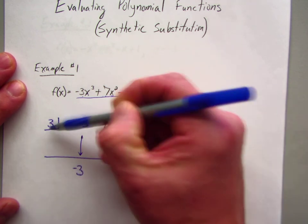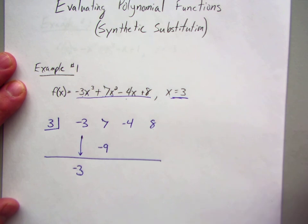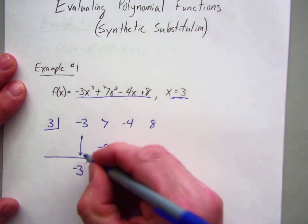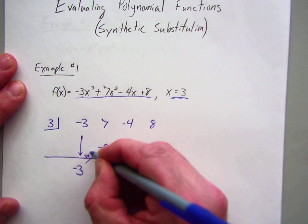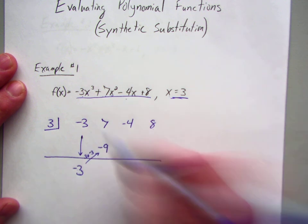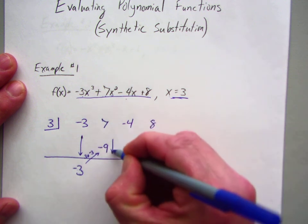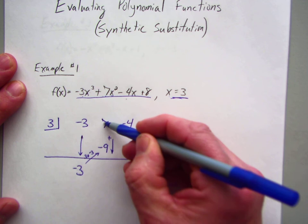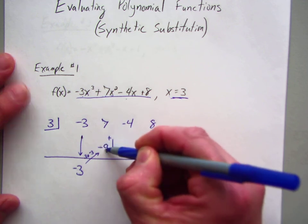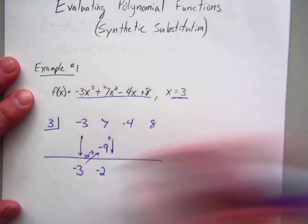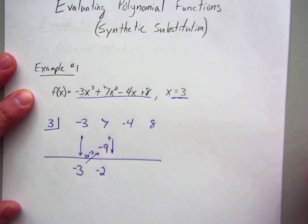So negative 3 times 3 is negative 9. So that is what goes there. So 3 times negative 3. Now I add—you always add going down. So 7 plus negative 9 is negative 2.